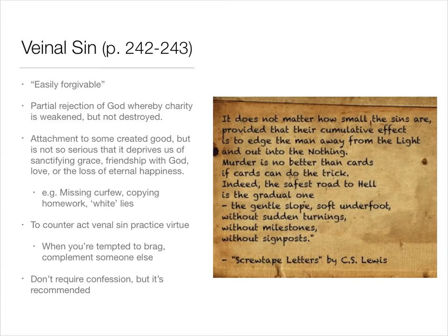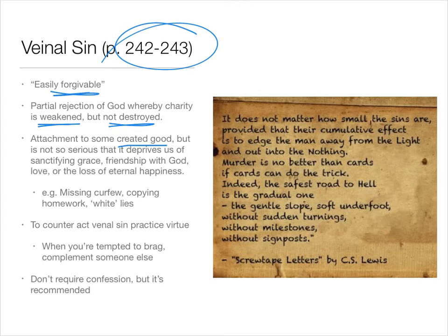Venial is a word that just means easily forgivable. These are sins that are easily forgiven — they are a partial rejection of God whereby the charity is weakened but not destroyed in our hearts. Examples from the book are typically an attachment to some created good, but not so serious that it deprives us of sanctifying grace, friendship with God, love, or the loss of eternal happiness. They listed examples such as missing curfew, copying someone else's homework — which they listed as a venial sin, though for me that's mortal, because you're turning in someone else's work and saying it's your own. Maybe because it's only homework and not a test. And then little white lies, like when your friend asks if something looks good and you don't want to hurt her feelings.